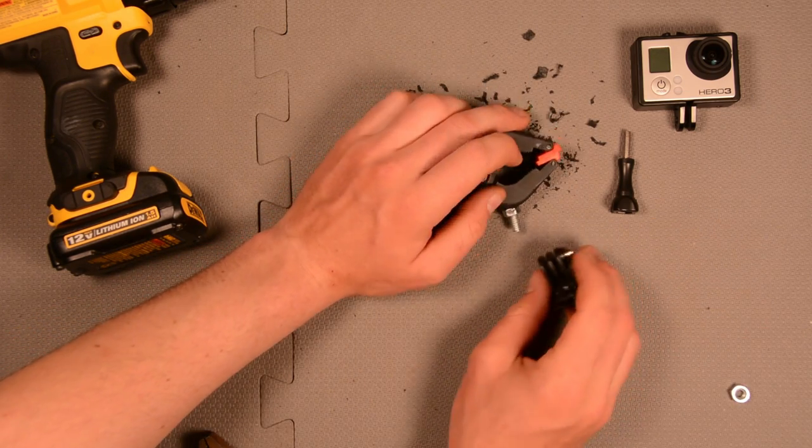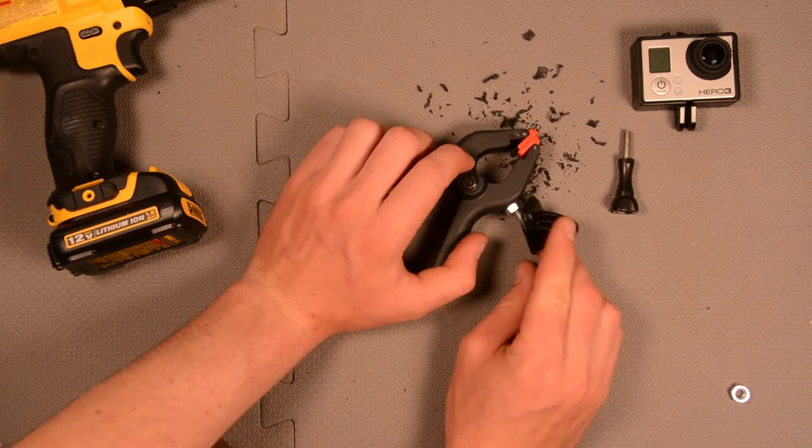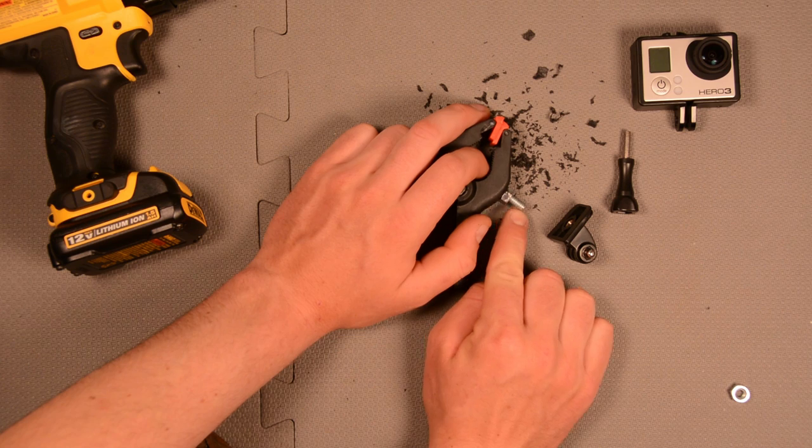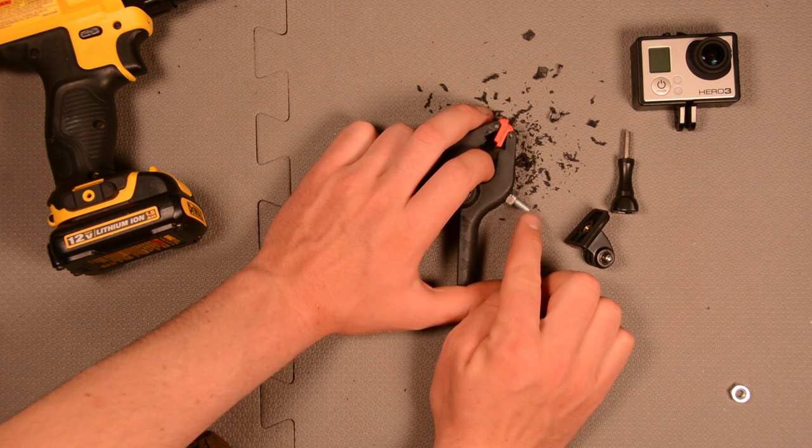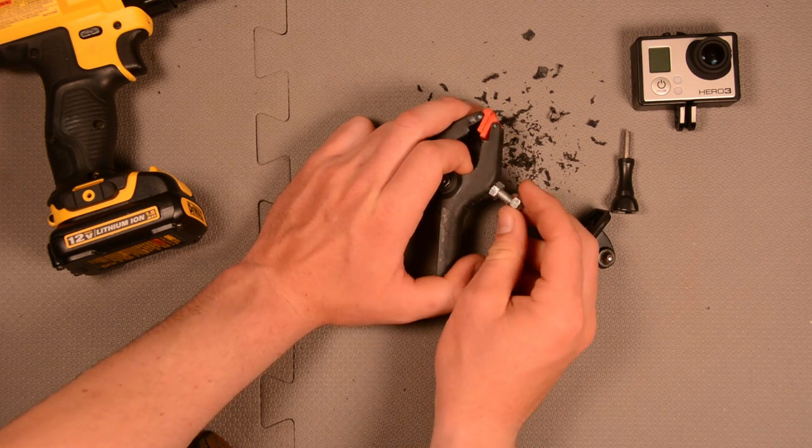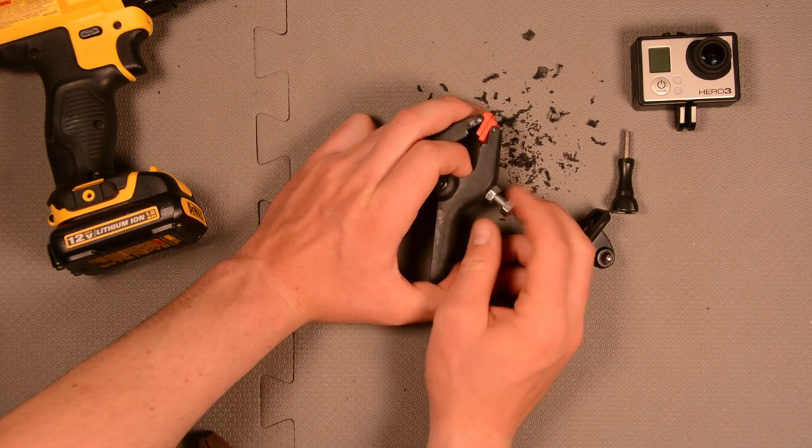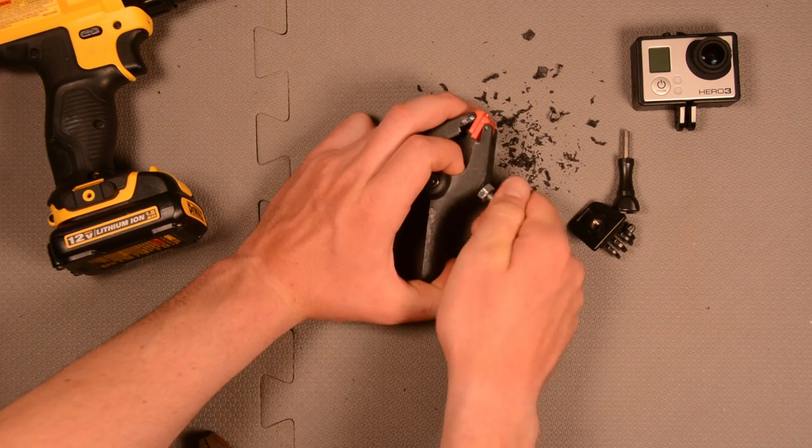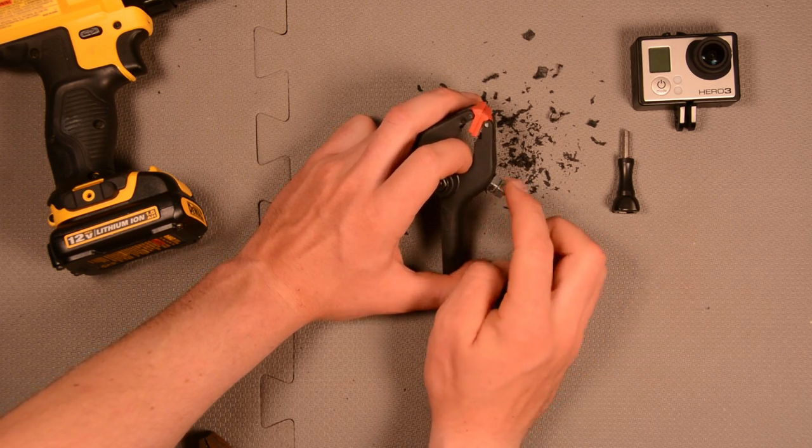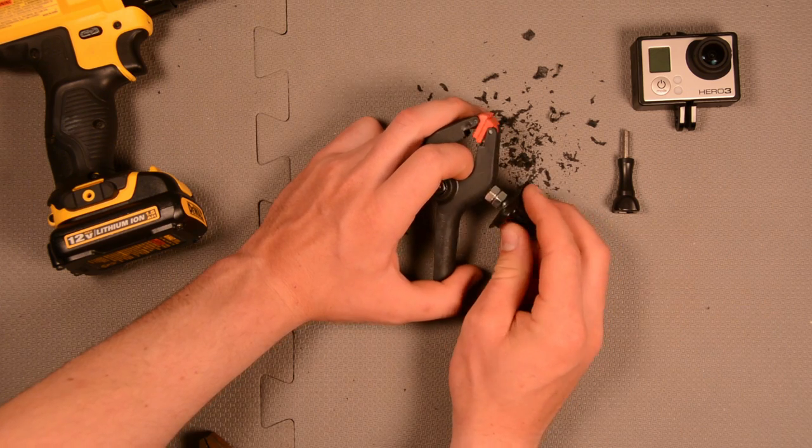And then we could just go ahead and put our tripod mount on now. The problem with that is though, the tripod mount is going to bottom out on the bolt. The two options are, you can either cut the bolt down to size or you can be lazy, get another nut, screw it on.